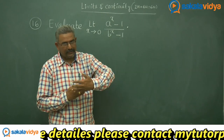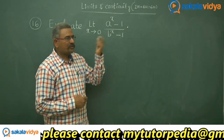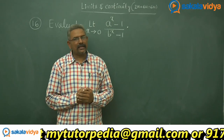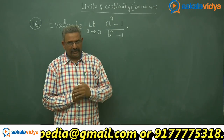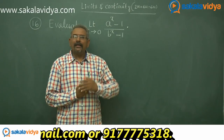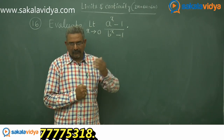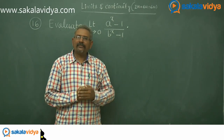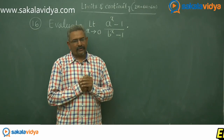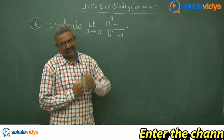In a similar manner, the limit as x approaches 0 of (bˣ - 1)/x is also log b to the base e. So the answer will be log a to the base e divided by log b to the base e. That can be written from logarithmic properties as log a to the base b, which is the final answer.